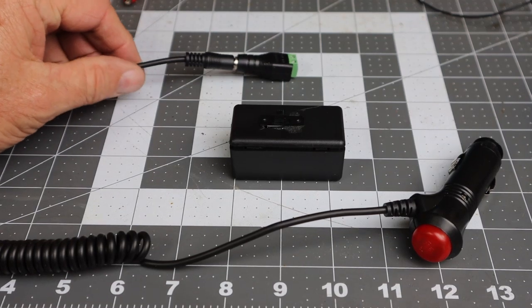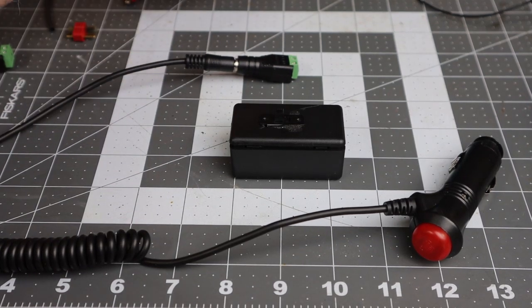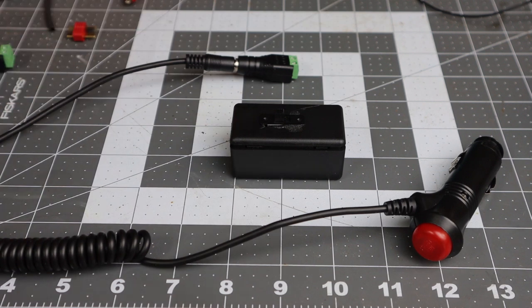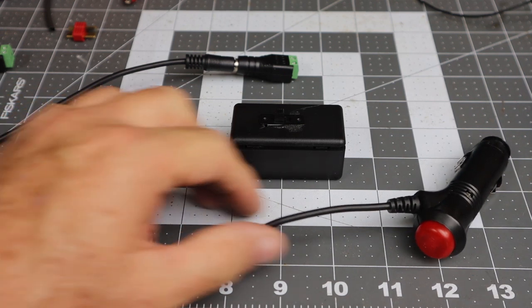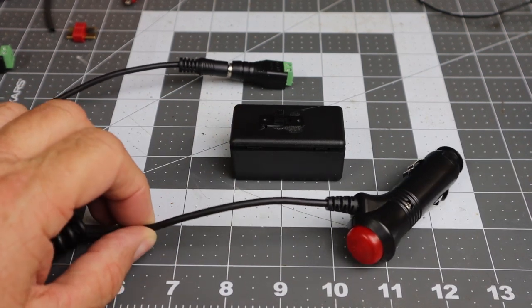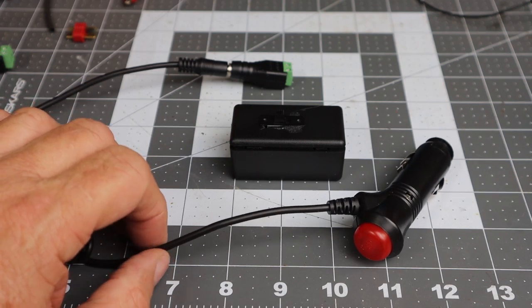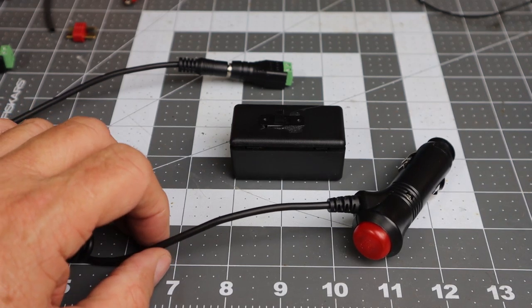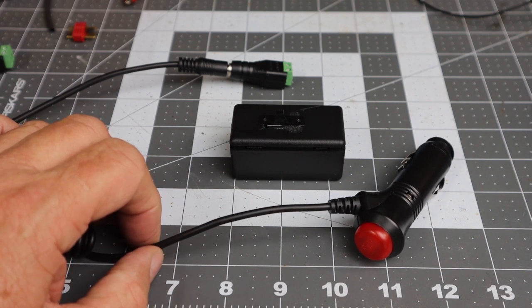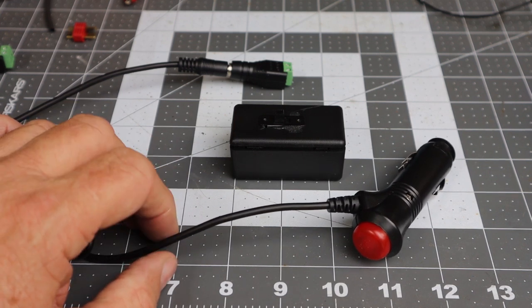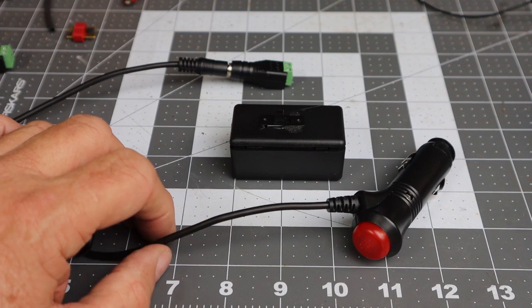As I mentioned before, to control the DC to DC converter you need two 12-volt switched sources. Switched means they're live when the ignition switch is turned on. One of the best ways, at least for my truck which is a RAM 1500, the manual indicates that the cigarette lighter is a good source for a switched 12-volt source.